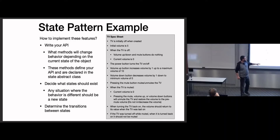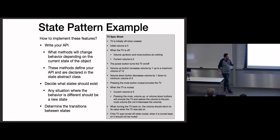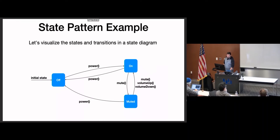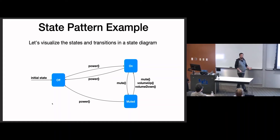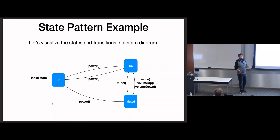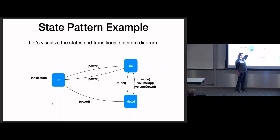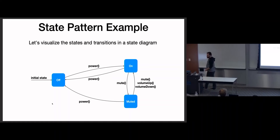If you wanted to change the spec so that turning the TV off while muted and back on keeps it muted, you would need a fourth state: an off-muted state. When power is pressed from off-muted you go to muted, and from regular off you go to on. The power button would need to do two different things based on program history — which tells us we need another state.